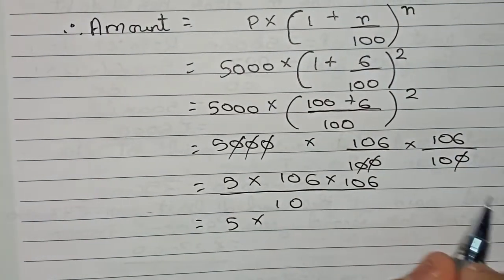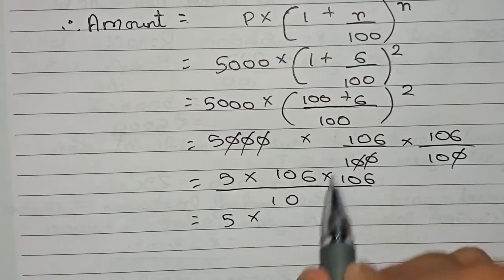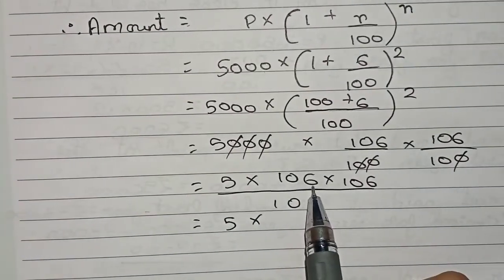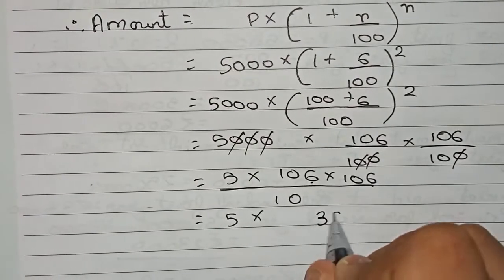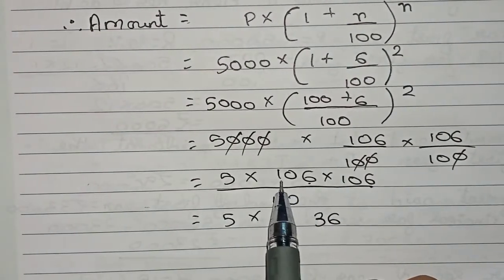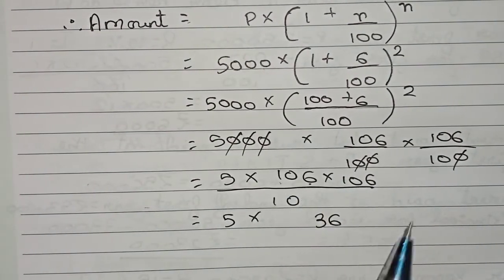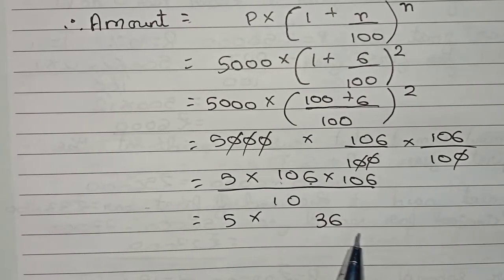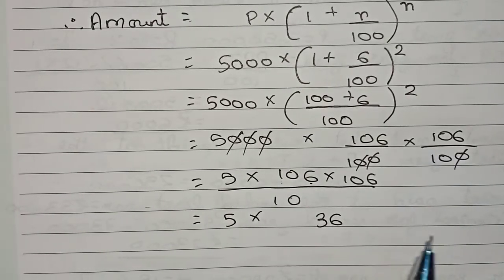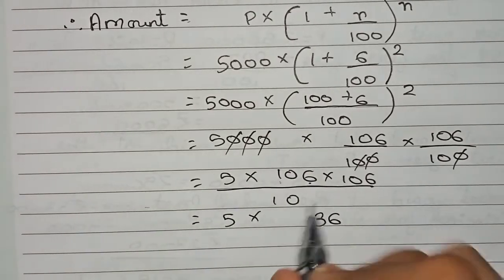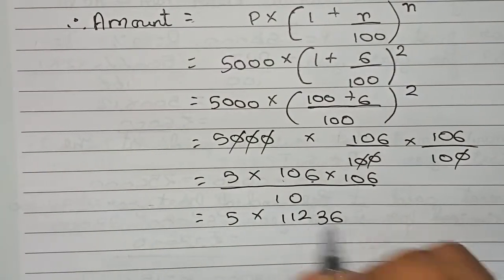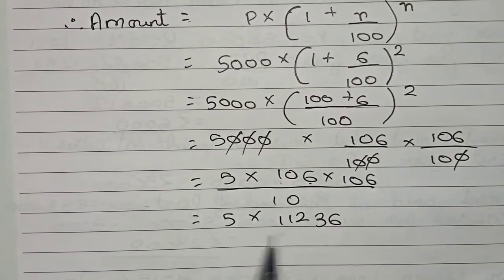For this 106 times 106 we will use a trick. For that trick first write 6, 6. What is 6 into 6? That is 36. Now 106 is 6 more than 100, so you will add 6 to 106, so it becomes 112. So write 112. So 106 into 106 becomes 11236.